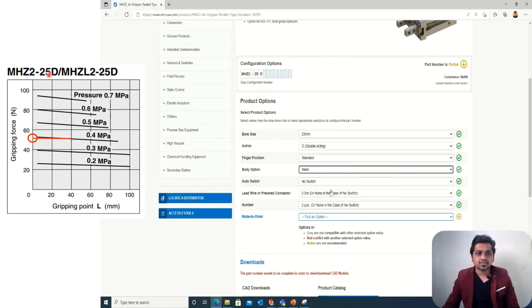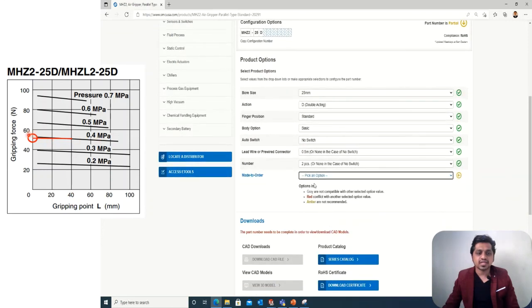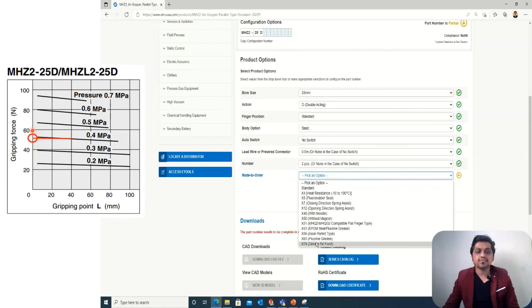You can see for the 25D this is the graph. For 40 distance at 0.4 bar, it's satisfying my condition - it's giving a gripping force of 50 newtons, which is greater than 39 newtons. This is how you can easily select from a graph.